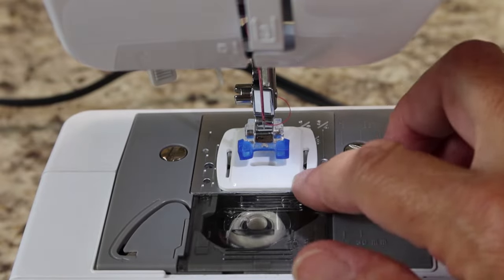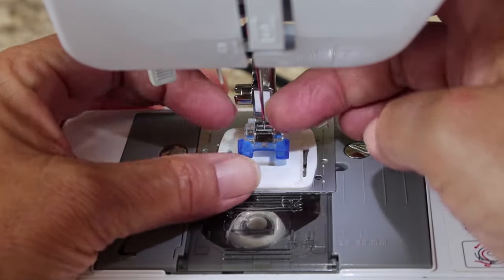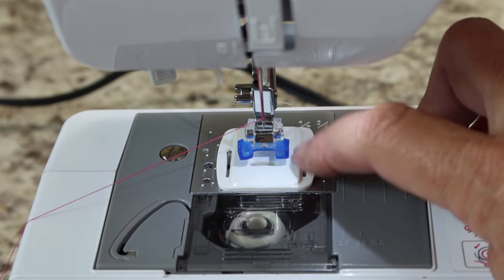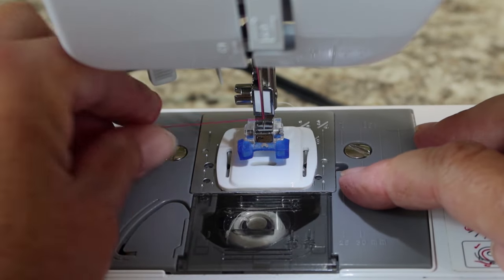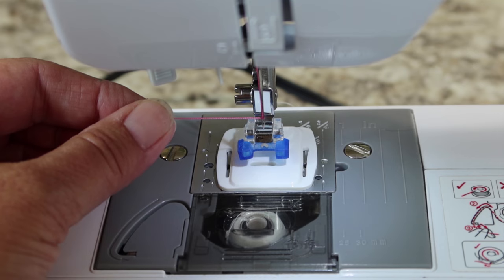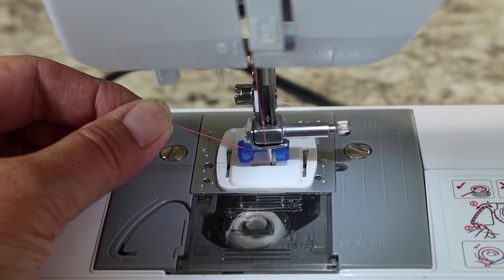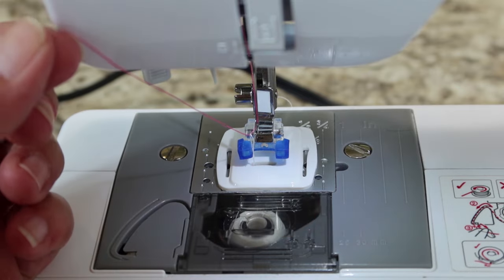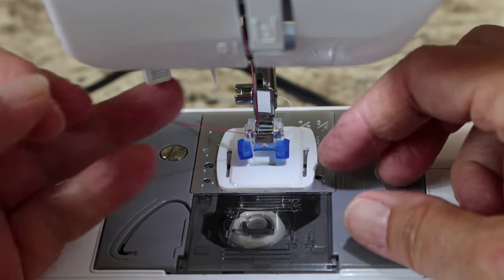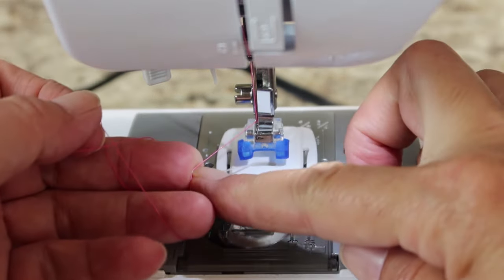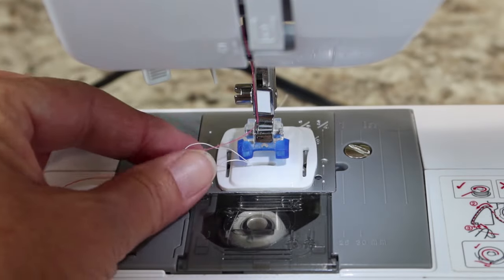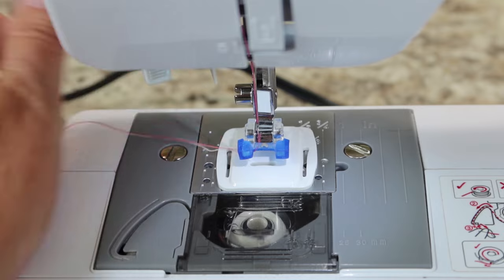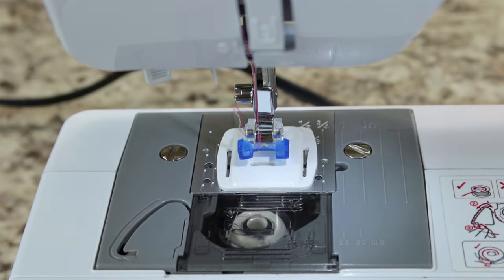And once you get this plate on here, what I like to do is go ahead and pull up my bobbin thread. Because when I put this on, it kind of sandwiched the bobbin thread down under there. So hold your needle thread out to your left a little bit. Rotate your hand wheel by hand and keep turning and you will see there came my bobbin thread. My bobbin thread is the white one. Pulled up the loop so I can pull that out and then tuck both of them right under the foot and pull them off to the back.